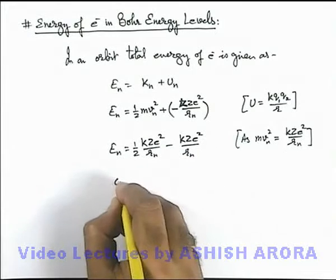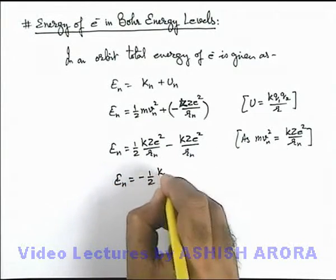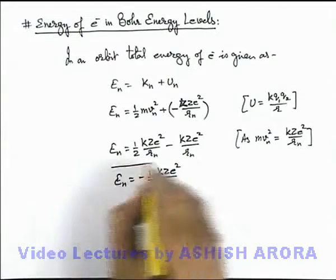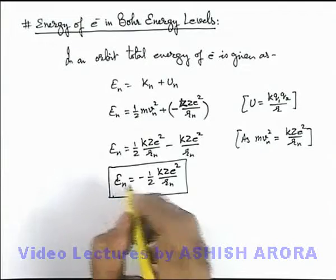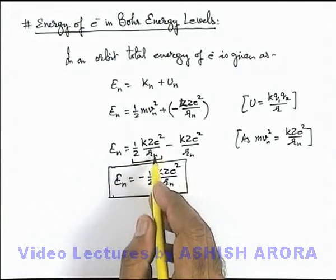This will give us the total energy of electron in nth orbit which is minus half k z e square over r_n. Here we can see this is the total energy. If we just have a look on the kinetic energy, it is half k z e square over r_n.